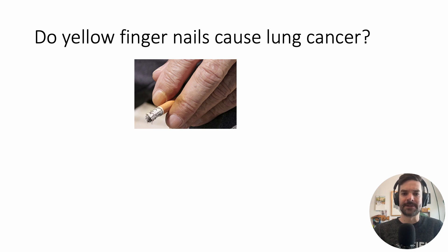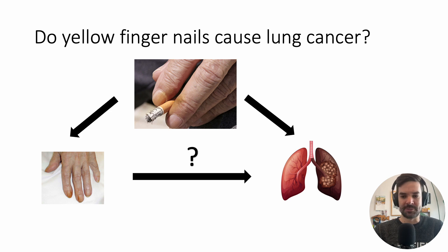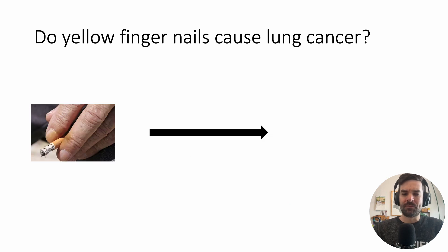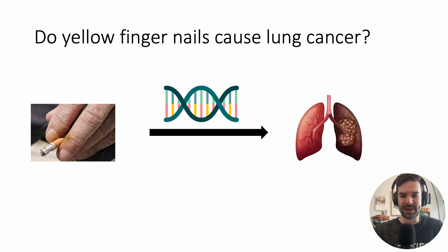Do yellow fingernails cause lung cancer? Maybe that person went on to get lung cancer — did the yellow fingernails cause it? Of course not. There's a common cause here: smoking causes yellow fingernails, and smoking can also cause lung cancer. And importantly, we don't want to adjust for things that are on the causal pathway. For example, smoking leads to DNA damage — we don't adjust for DNA damage in the association between smoking and lung cancer, because that's on the causal pathway leading to the lung cancer.